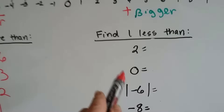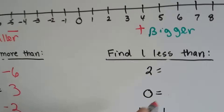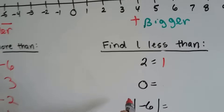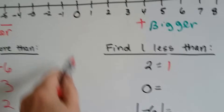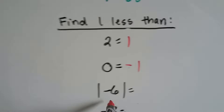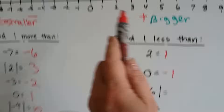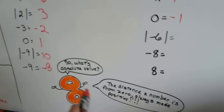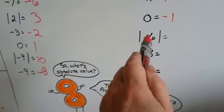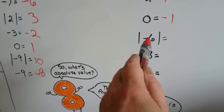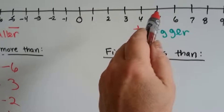Now we're going to do one less. What's one less than two? One less than two is one. What's one less than zero? Here's zero — if we go one less, we're at negative one. What's one less than the absolute value of negative six? Absolute value means the distance from zero, so the distance is six. They're always made positive, so what's one less than six? Five.